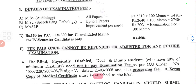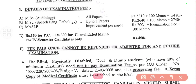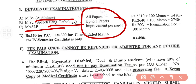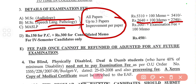The details of examination fee are given here for MSc Audiology and Speech Language Pathology and MA SLP. For all papers up to three improvement per paper, the fee will be 5310 plus 100 for the memo, totaling 5410. For Speech Language Pathology, you need to pay 2640 plus 100 for the memo, that is 2740. For MA SLP, you need to pay 200 rupees plus the examination fee plus memo.